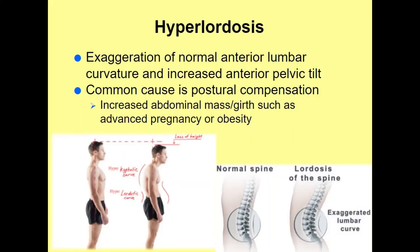Hyperlordosis is an exaggeration of the anterior lumbar curvature, which increases anterior pelvic tilt. The common cause is postural compensation — a beer belly, multiple pregnancies, significant overweight or obesity — where excess abdominal weight and girth pulls the body forward, dragging the back with it, creating an exaggerated lumbar curve.